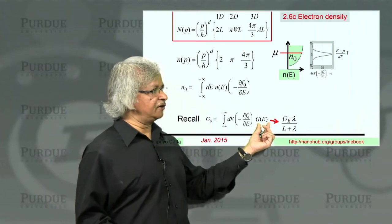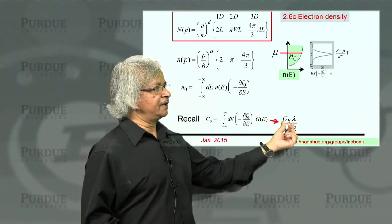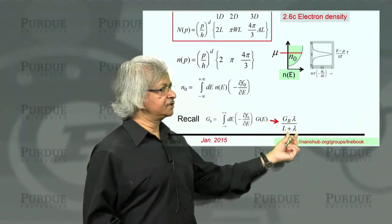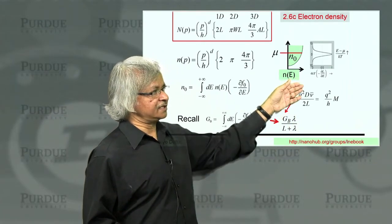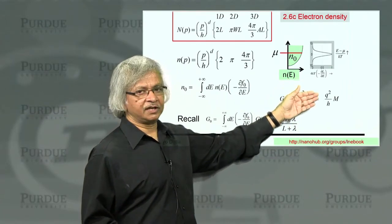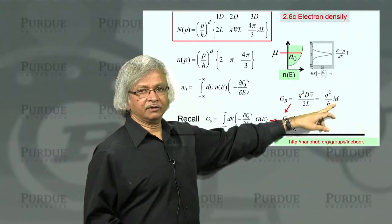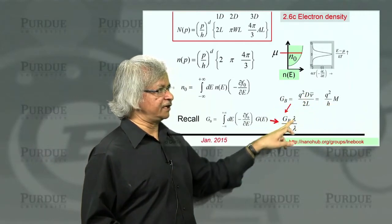And then we are talking about this G of E. That's determined by this ballistic conductance and the mean free path. And the ballistic conductance itself has this expression of density of states times velocity or the number of modes. These are all functions of energy.